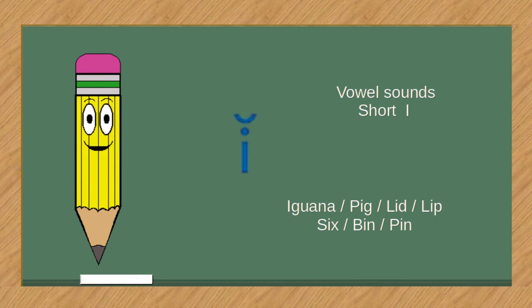Vowel sounds, short I. Iguana, pig, lid, lip, six, bin, pin.